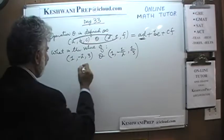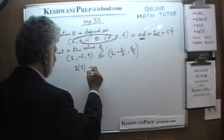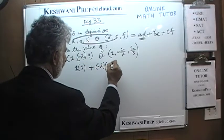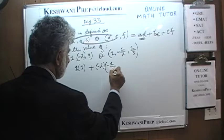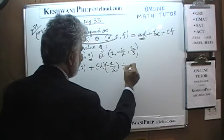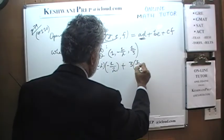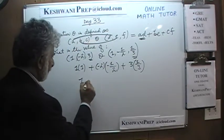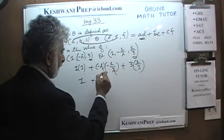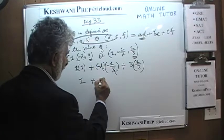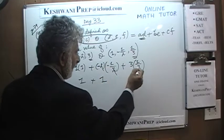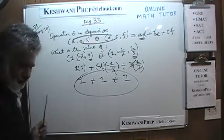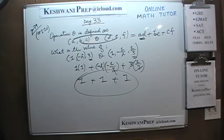So we have 1×1, plus negative 2 times negative one-half, plus 3 times one-third. That's all it is. 1×1 is just 1; the negatives cancel to give positive 1; and the 3 cancels to give positive 1. The answer is 3 — this quantity equals 3.